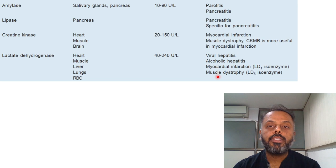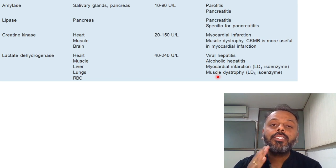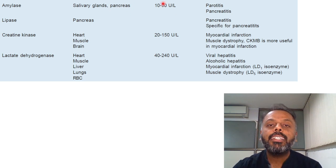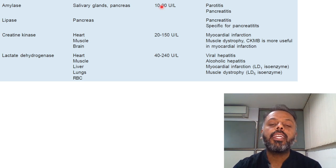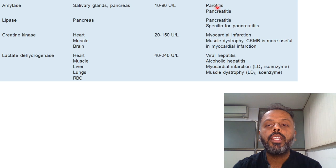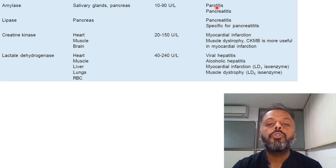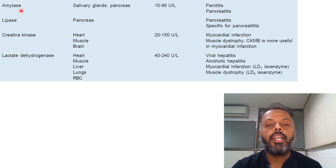The fourth enzyme is amylase. Amylase hydrolyzes starch to maltose. Sources are salivary glands and pancreas, and the normal level is 10 to 90 units per litre. Its level gets increased in acute and chronic pancreatitis as well as in parotitis. The level of amylase returns to normal within 2 to 4 days after the onset of an acute episode.